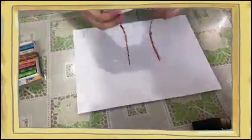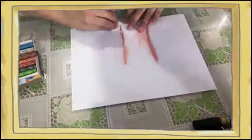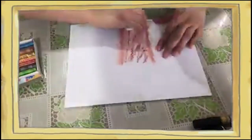First, you have to draw the body of the tree using oil pastel and then smudge it using tissue.